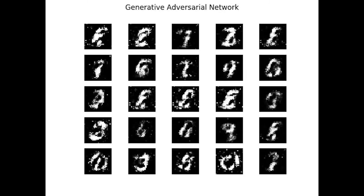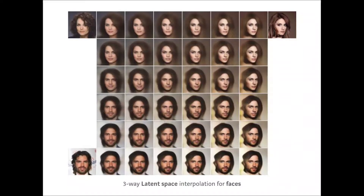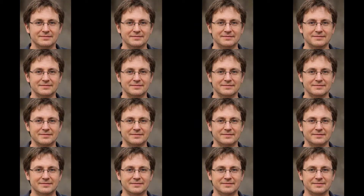Once training is complete, each point of latent space is mapped to a sample in the original distribution. So if we were training on human faces, each latent vector could be mapped to a single face. Moving through the latent space allows us to interpolate between the different learned faces. In fact, it should be possible to find any possible human face in the latent space, provided our training set has sufficient facial variety. After training, the discriminator network is usually discarded as its job is complete, and the generator is used for future generation tasks.